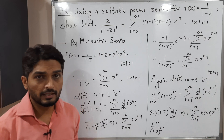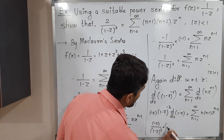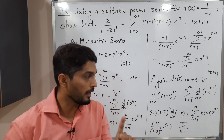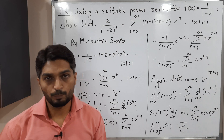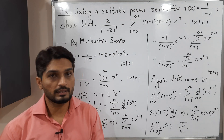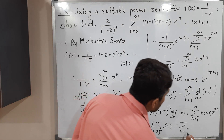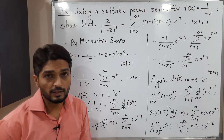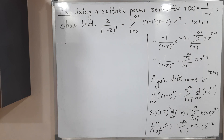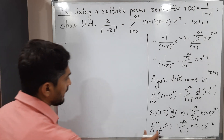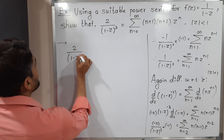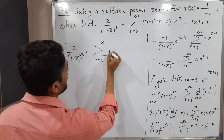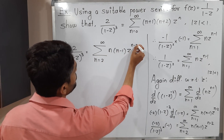The minus sign and the -1 from the chain rule give a plus. So 2/(1-z)³ = Σ n(n-1)·z^(n-2). Now, if I put n=1, we get 1(1-1) = 0, so n=1 also contributes zero. Therefore I start from n=2 to infinity: 2/(1-z)³ = Σ(n=2 to ∞) n(n-1)·z^(n-2), with condition |z| < 1.